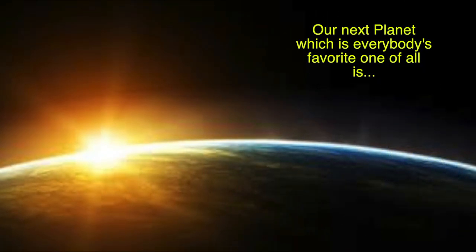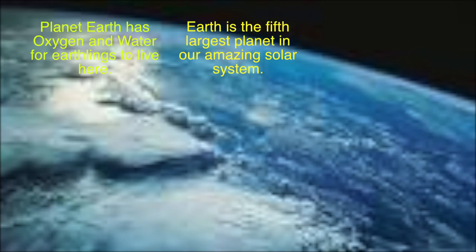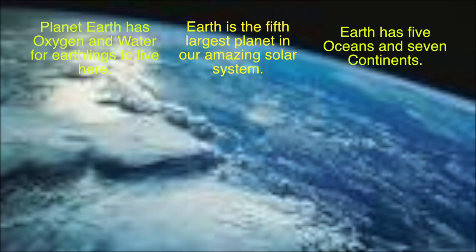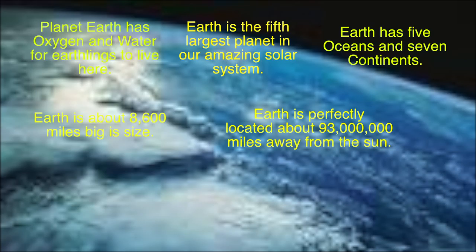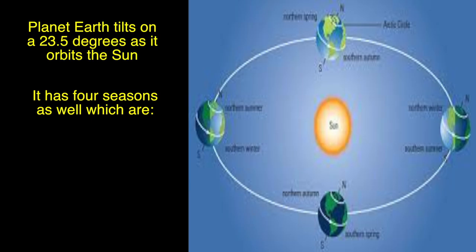Our next planet, which is everybody's favorite one of all, is Planet Earth — third planet from the sun. Population: 7 billion Earthlings, with one satellite that orbits it. Planet Earth has oxygen and water for Earthlings to live here. Earth is the fifth largest planet in our amazing solar system, with five oceans and seven continents. Earth is almost 8,600 miles big in size and is perfectly located about 93 million miles away from the sun. Planet Earth tilts on a 23 and a half degrees as it orbits the sun, and it has four seasons: winter, spring, summer, and fall.